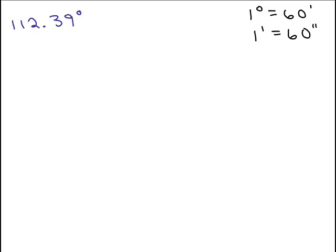So here's our first problem. We have something in decimal form, 112.39 degrees, and we want to change this to degrees, minutes, and seconds. So what does this mean, 112.39 degrees? It means the whole number part is 112 degrees, and then this is the part of the degree, 0.39 degrees. Now I want to change this 0.39 degrees first to minutes. So we know that one degree is the same as 60 minutes.